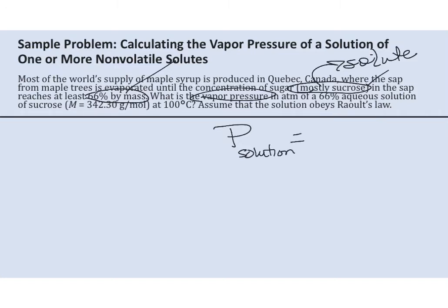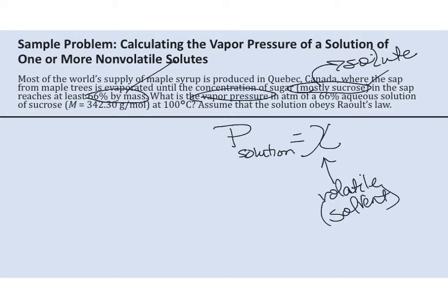Listen carefully here. In Raoult's Law, you want the mole fraction of the volatile substance — which in most cases will be the solvent itself. You do not want the mole fraction of the solute, because it's not volatile. And you multiply that by the pressure of the solvent, or whatever the volatile component is.